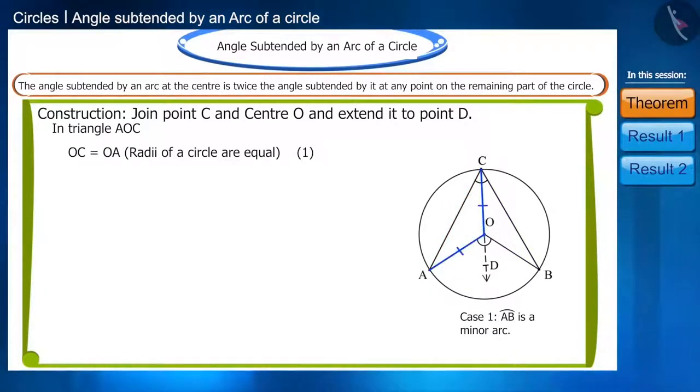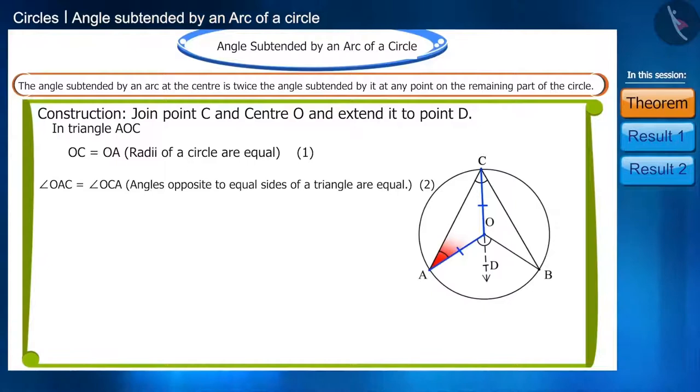In triangle AOC, OC and OA are equal as they are the radii of the circle. The angles OAC and OCA will be equal because angles opposite to equal sides of a triangle are equal.